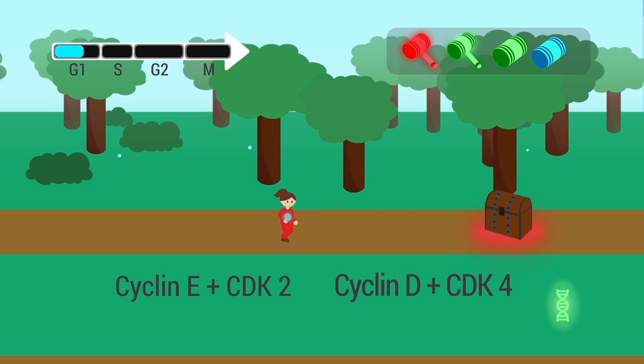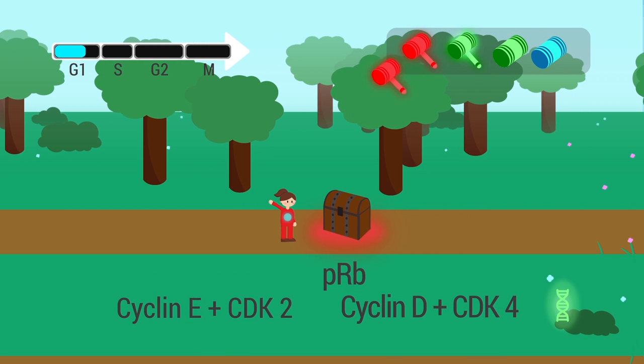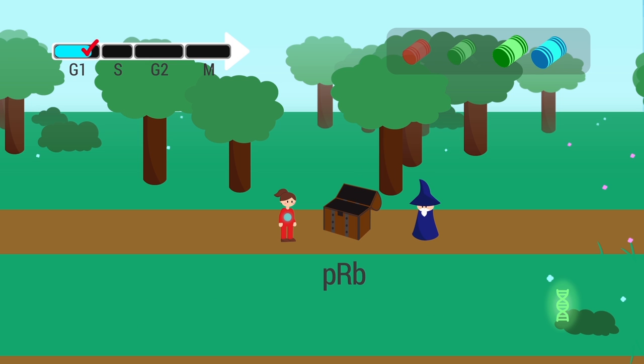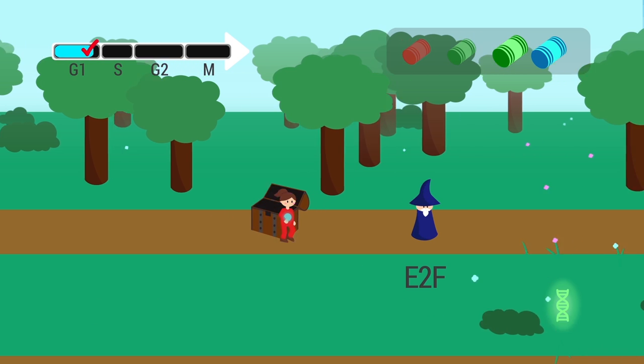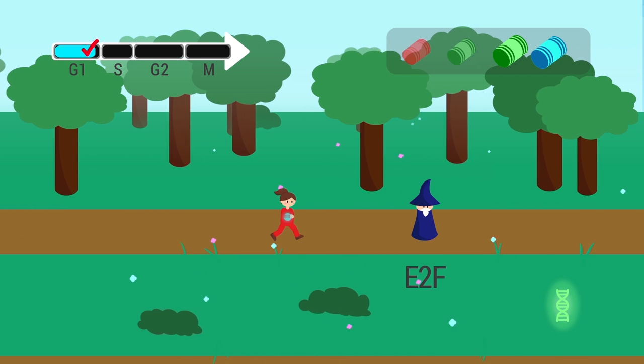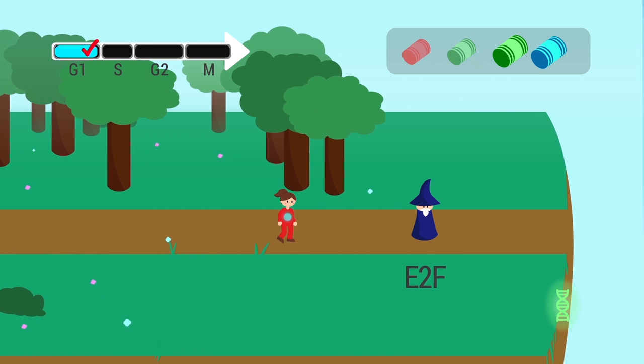The net result is phosphorylation of the retinoblastoma protein, or pRB, by either of the two complexes, preventing it from binding to its partner, the transcription factor E2F. Once free of pRB, E2F promotes progression beyond G1.